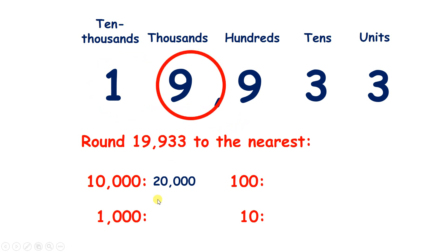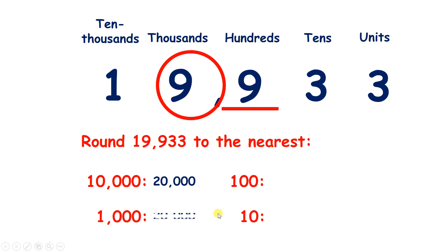Now rounding to the nearest 1,000, we find the place, look next door, and it's 5 or more, so we need to raise that 9. But 9 is our highest digit, which means we look at the number 19 and raise that to 20. Then look to the right, put zeros in sight — so we have 20,000.